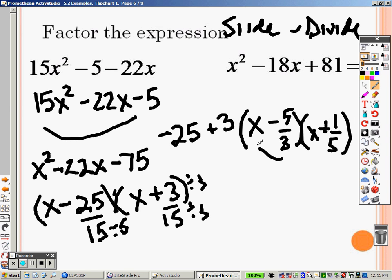So I move that because we can't have fractions and factors. It's a 3x minus 5. And I move that. So I get 5x plus 1. And there's the factors for that one.